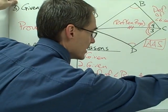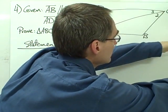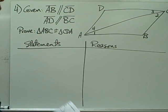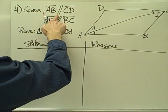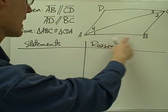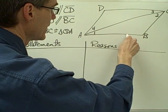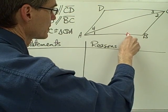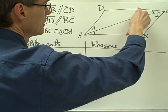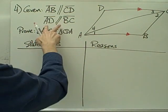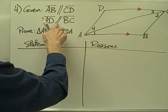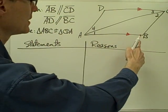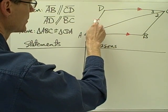Let's take a look at one more example — example number four. I have this figure and I'm told segment AB is parallel to segment CD, so AB is parallel to CD. Also segment AD is parallel to segment BC — so these two segments are also parallel.